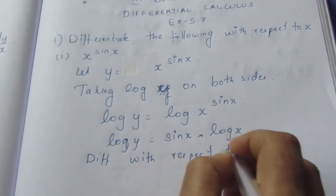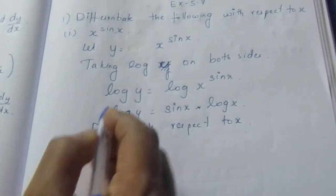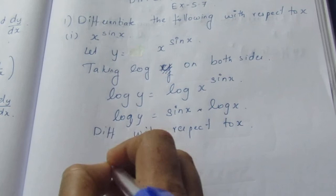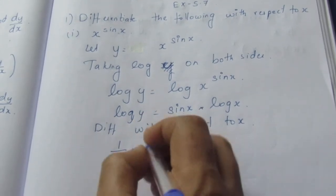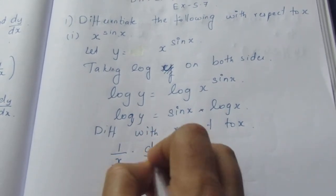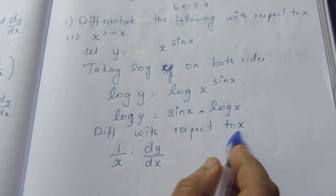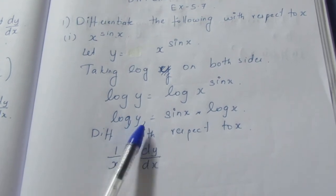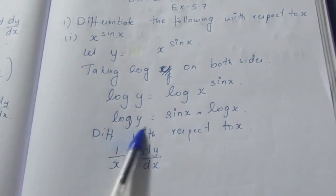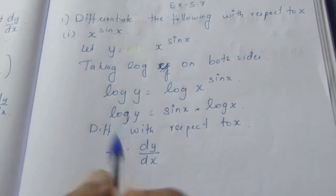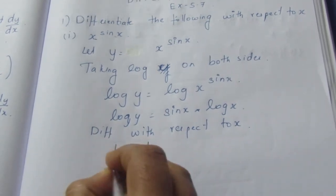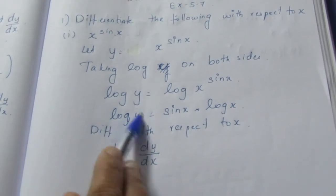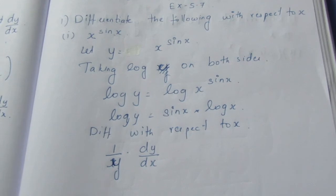Now we are going to differentiate both sides with respect to x. Differentiating log y gives 1 by y times dy by dx on the left side, using the chain rule — the inner function differentiation gives dy by dx.